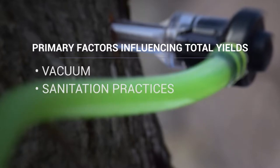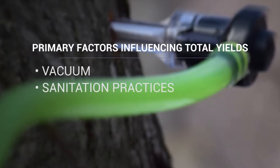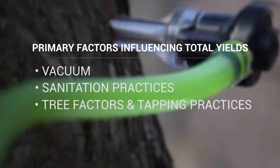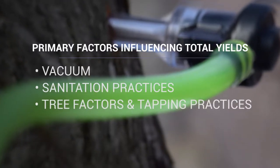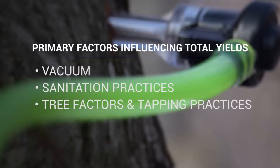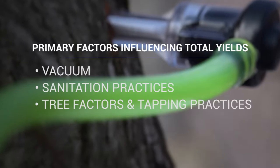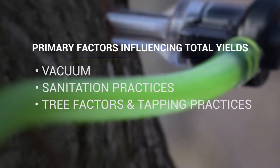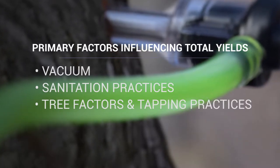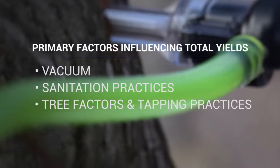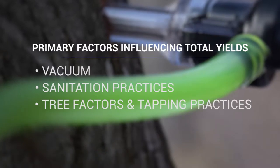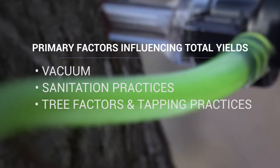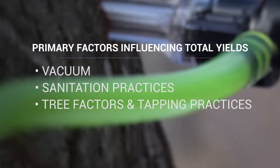Vacuum, spout and drop sanitation practices, and tree factors such as size, health, sap sweetness, the amount of non-conductive wood present in the tapping zone, and practices like tap hole depth and the number of taps per tree.